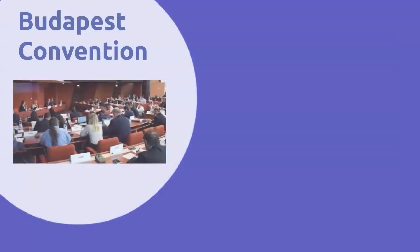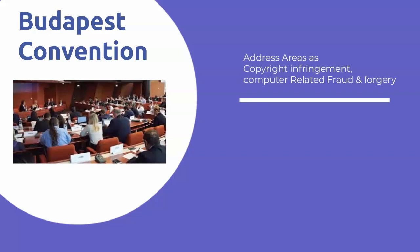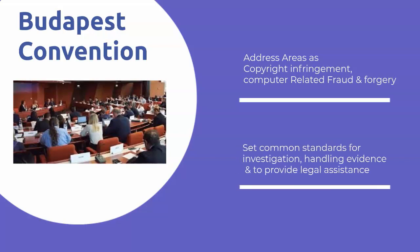The second framework is the Convention on Cybercrime, also known as the Budapest Convention. It addresses areas including copyright infringement, computer-related fraud and forgery, pornography, and violations of network security. The Budapest Convention also establishes a set of common standards for the investigation of cybercrime, handling of evidence, and the commitment to provide mutual legal assistance.